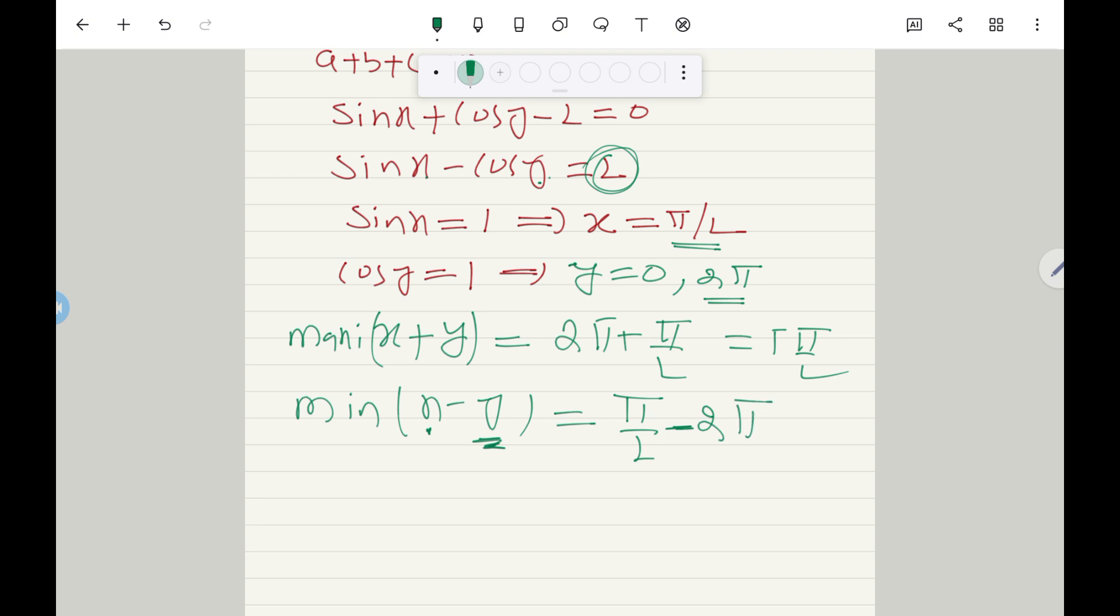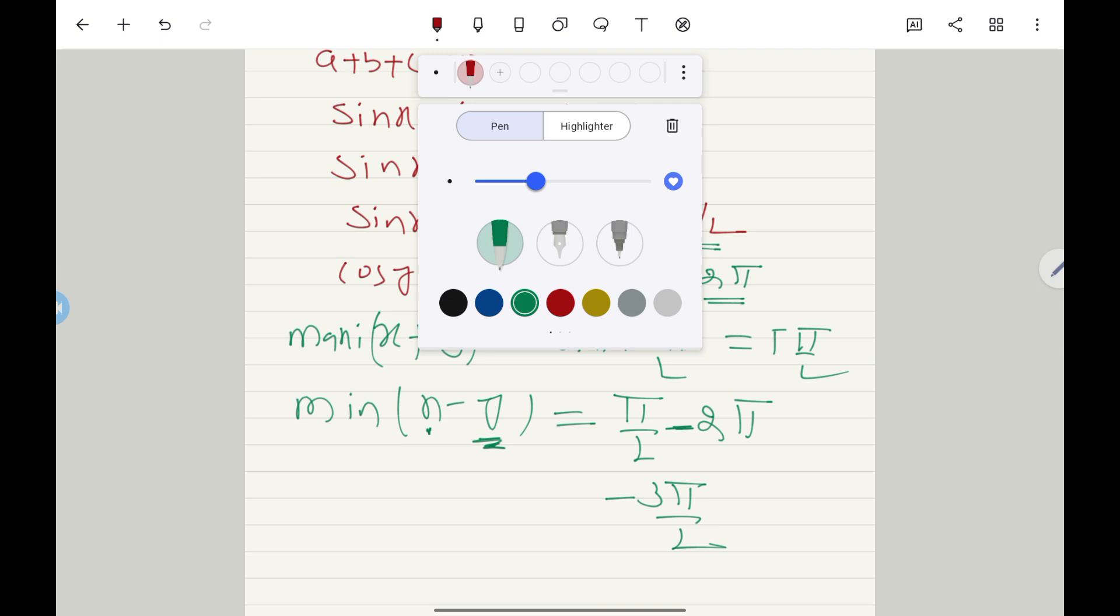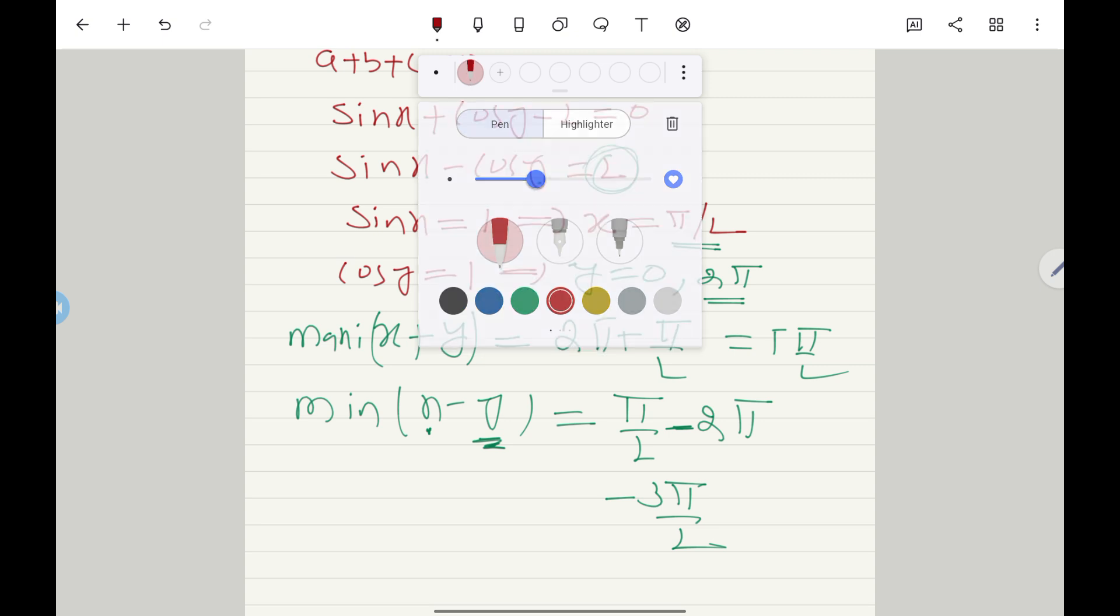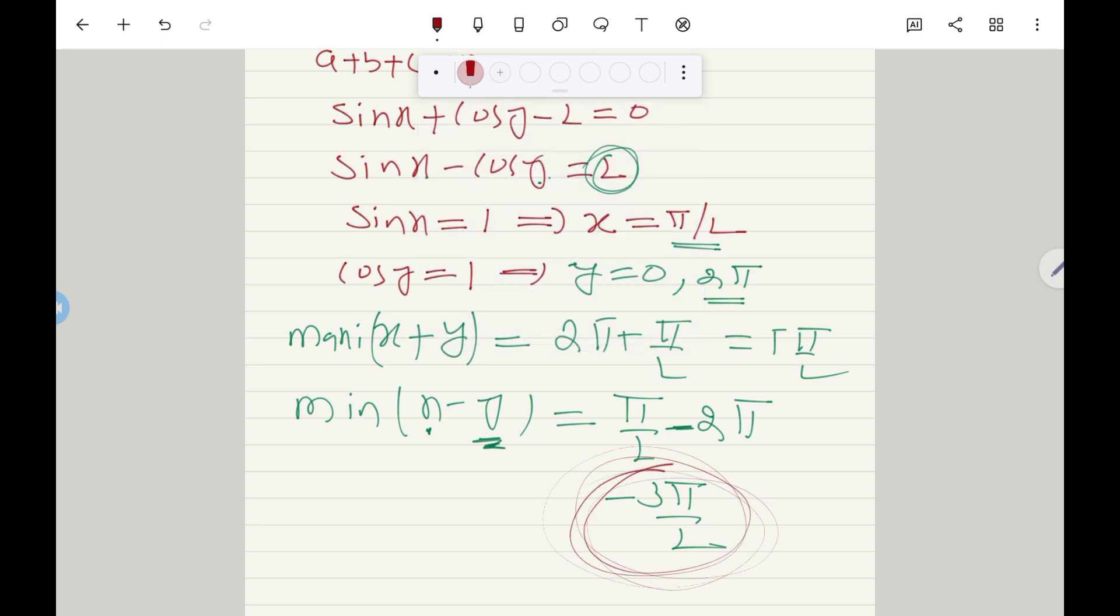Now what I can say here, minimum value of x - y is π/2 - 2π, or otherwise I can say that -3π/2. Therefore my conclusion is here, the minimum value of x - y is -3π/2 and maximum value of x + y is 5π/2.